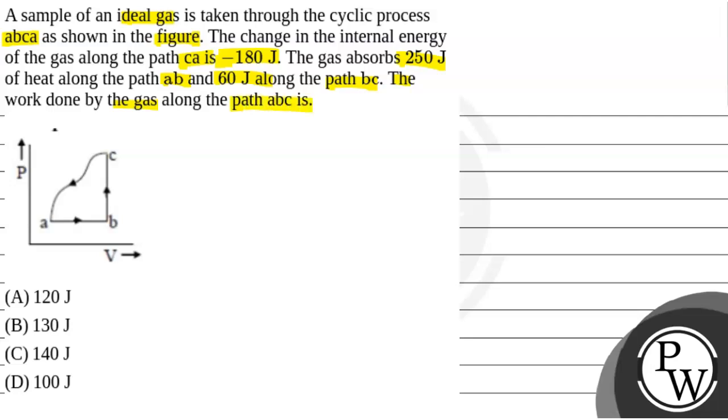So, given that the internal energy along the path CA is minus 180 J and the gas absorbs 250 J on the path AB. That means delta Q_AB is positive 250 J. And 60 J along path BC, so delta Q_BC is 60 J. We will find that W_ABC is the answer.